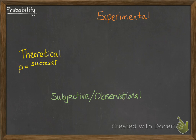Theoretical is the one we're most likely to use. It's talking about things that we think should happen based on the knowledge that we have. So it's the number of successful outcomes divided by the possible total outcomes we could have, which gives us our probability.